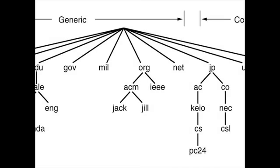The domain name system had its first successful test in 1983, with the domain .ARPA. In 1984, seven more generic top-level domains were added: .com, .net, .org, .edu, .gov, .mil, and .int.